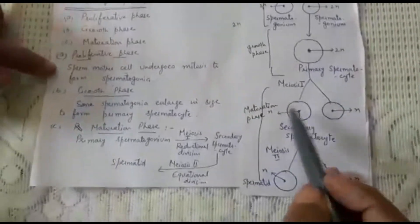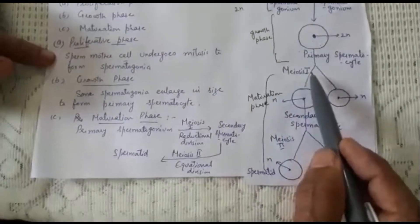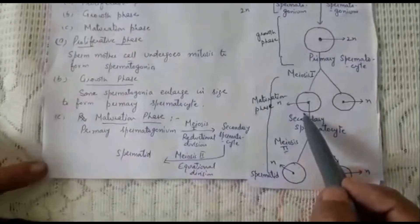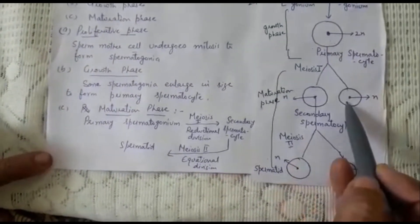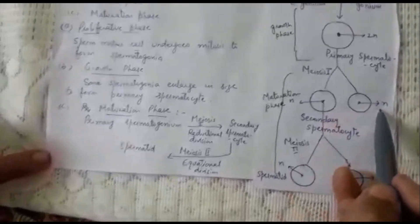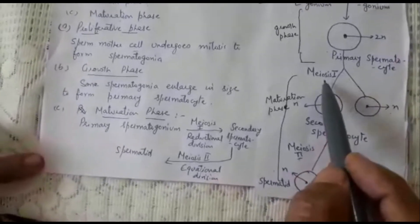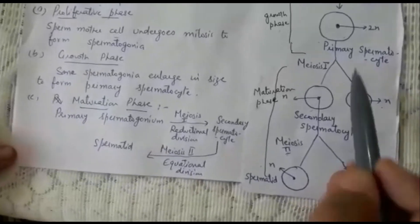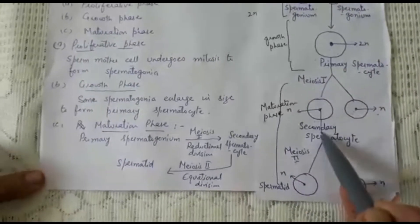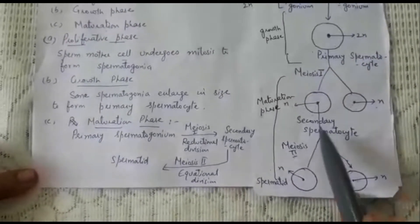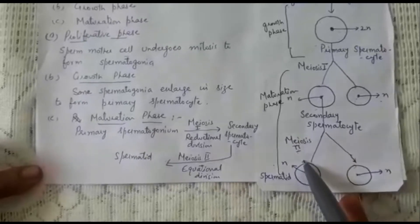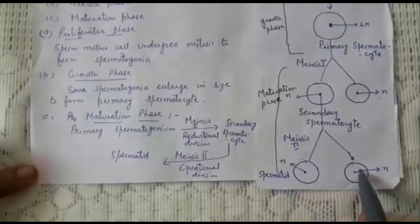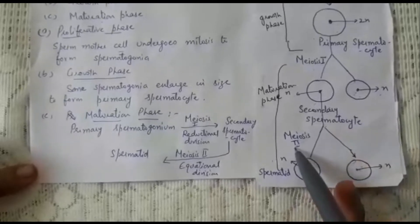The last phase is the maturation phase, during which meiosis occurs. Meiosis is completed in two stages. Meiosis I is the reductional division, where the primary spermatocyte divides to form two secondary spermatocytes, each having half the chromosome number — they are haploid. Then each secondary spermatocyte divides by meiosis II, which is the equational division where the chromosome number remains the same, forming two cells known as spermatids.